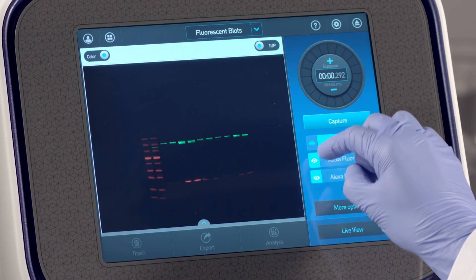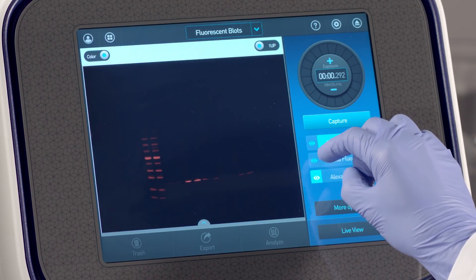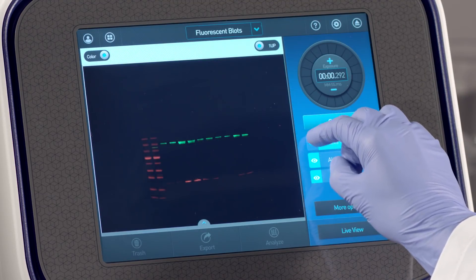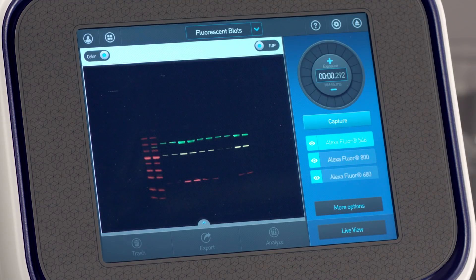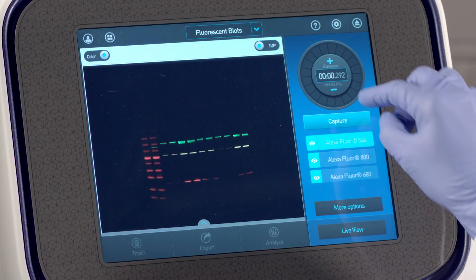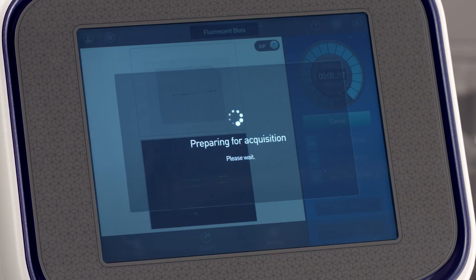Toggle easily between fluorescent channels for quick visualization, and manually adjust using the exposure dial if desired. When satisfied with the previewed image, tap Capture to acquire the image.